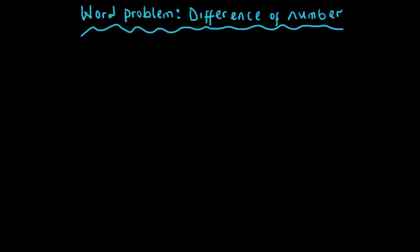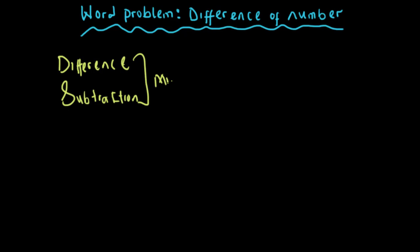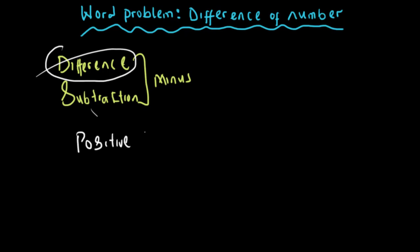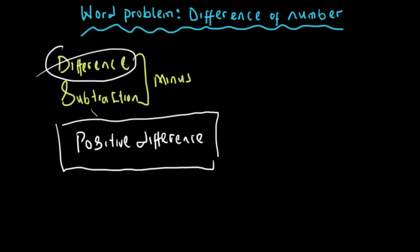In this video we are going to be looking at a word problem, specifically the difference of numbers. I would like you to understand that difference and subtraction both mean minus. When you hear 'difference' it means you are subtracting one number from another. It is usual to subtract the smaller number from the bigger number, and when you do this we call it positive difference. Many times, if you are just asked to find the difference between two numbers, we assume the positive difference is being asked for.